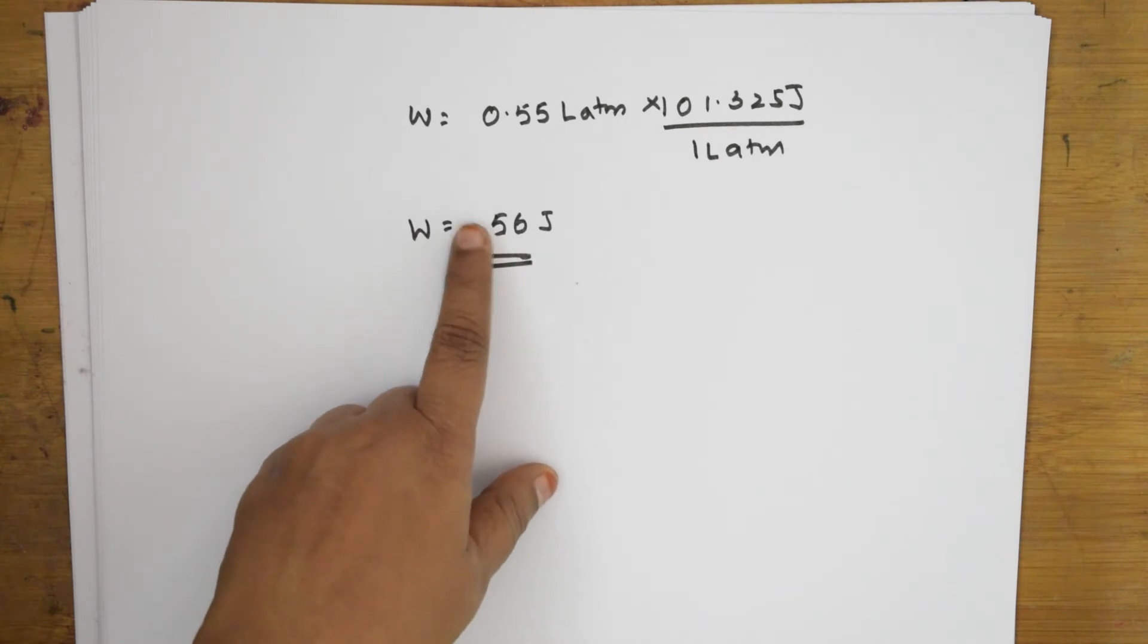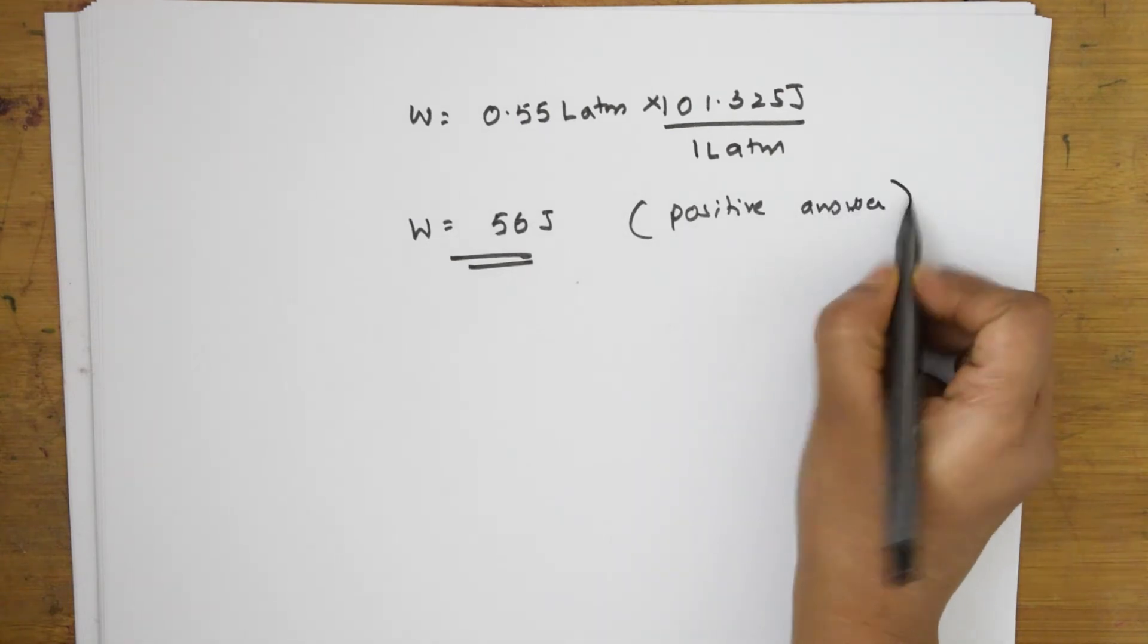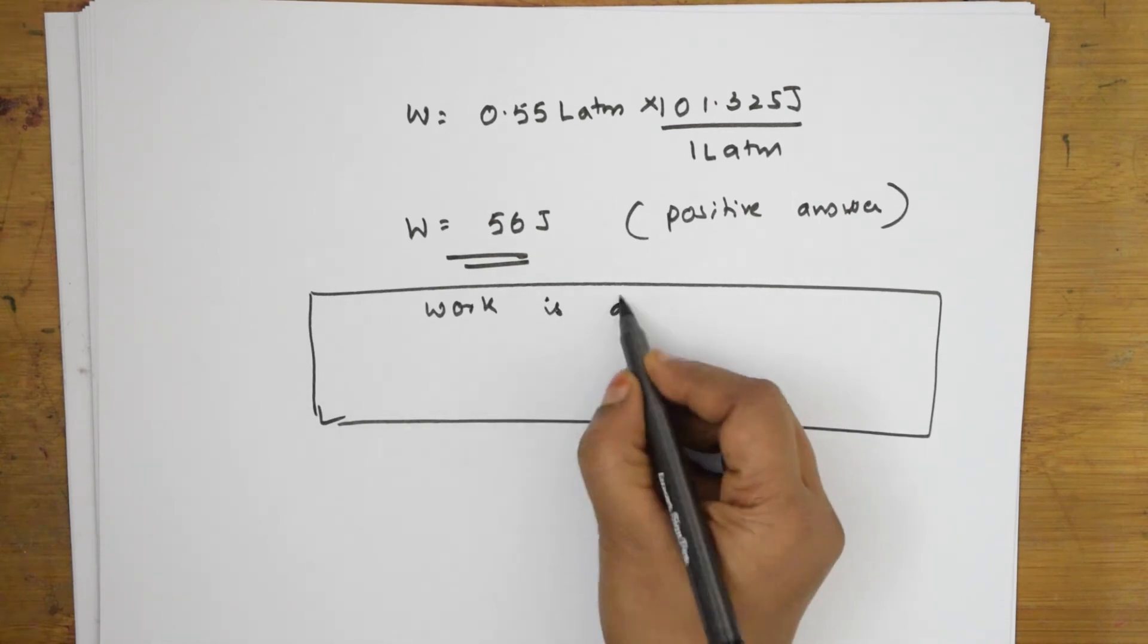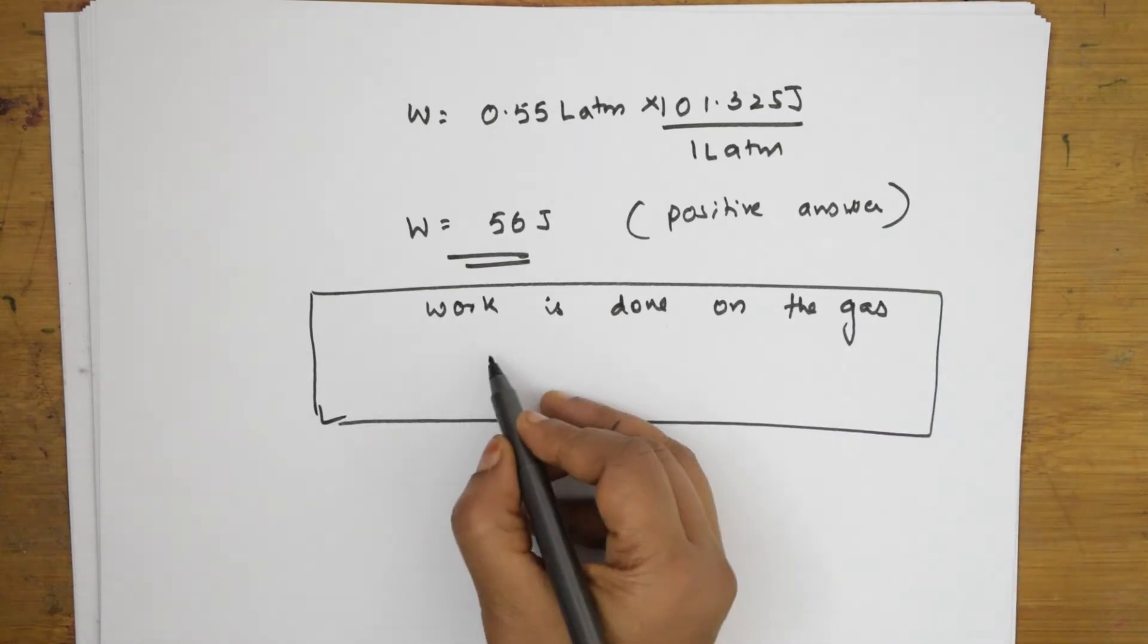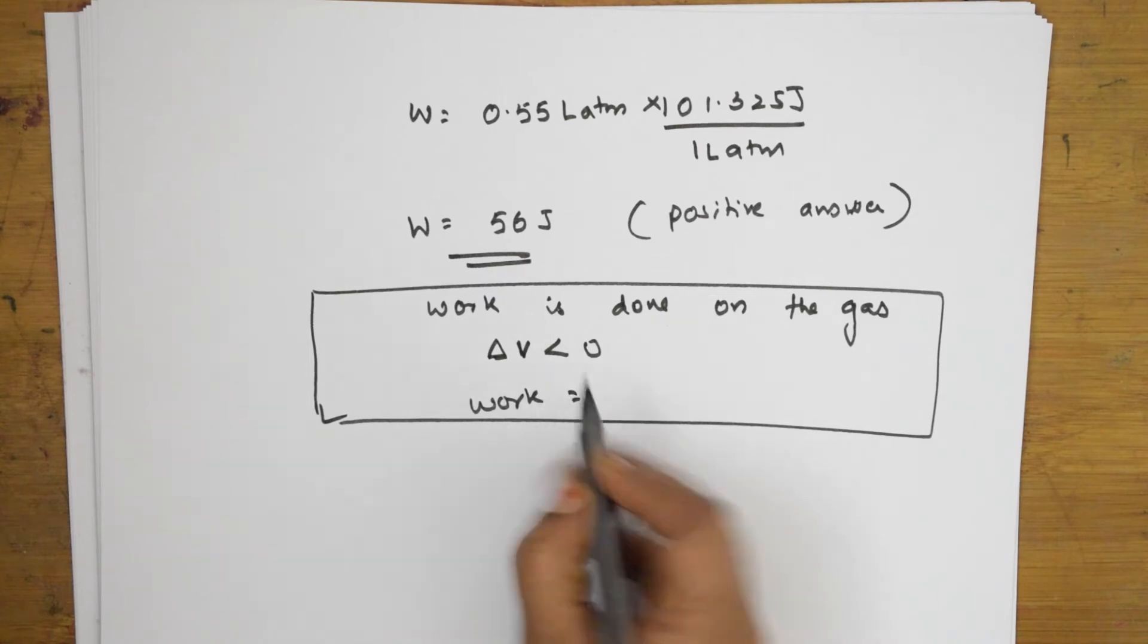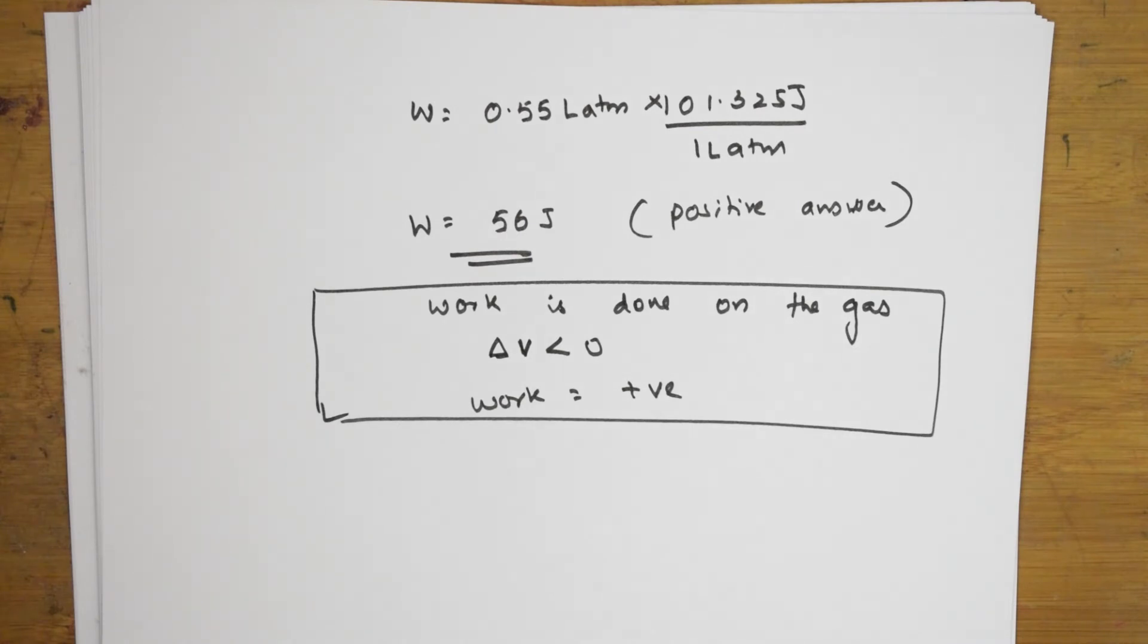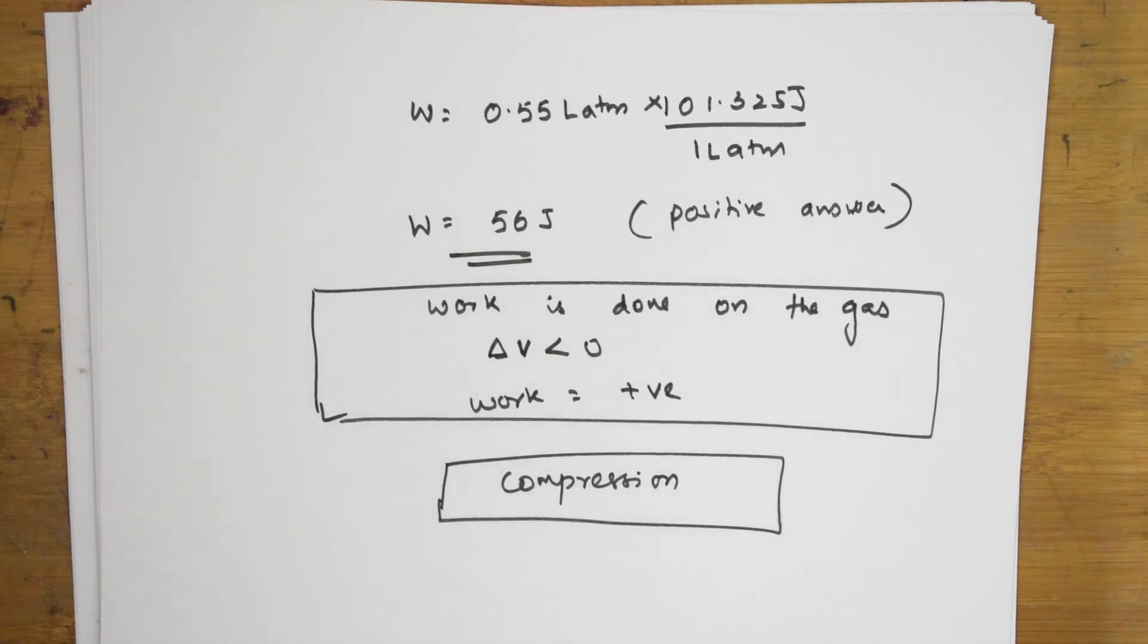Now, what answer did I get? I got positive answer, isn't it? So, here you got a positive answer. Now, why did I take this? Now, I am telling you. So, basically, whenever, let us put now into this box. Whenever work is done on the gas. Earlier it was by the gas. Now, it is on the gas. What happened? Delta V here is less than 0. So, what happened to this work? Work has become positive. Positive value. So, you know what happened? Energy is transferred to the gas.